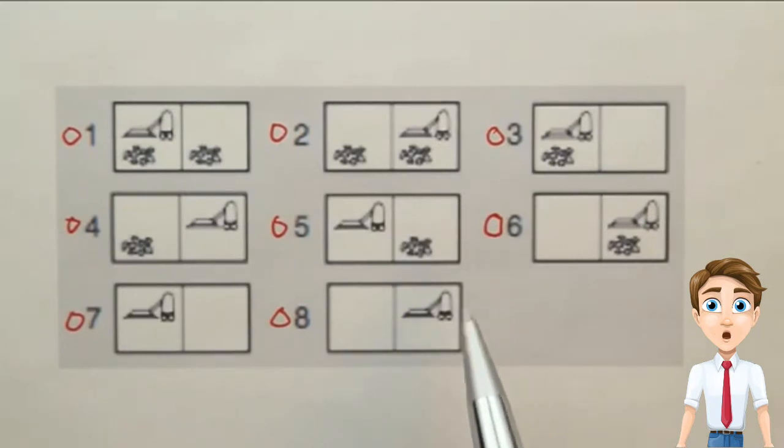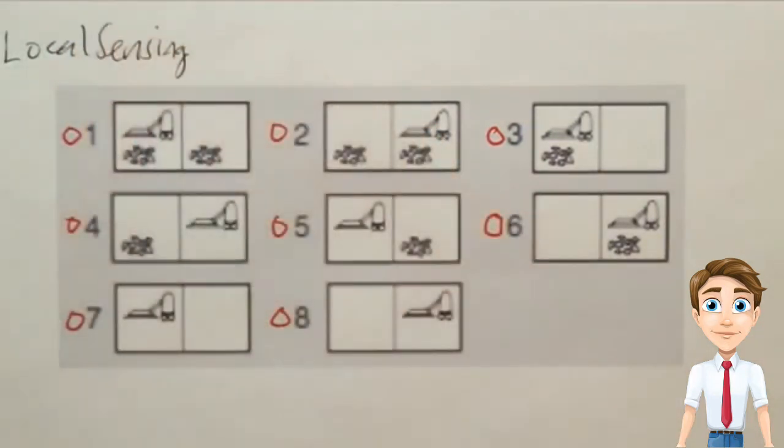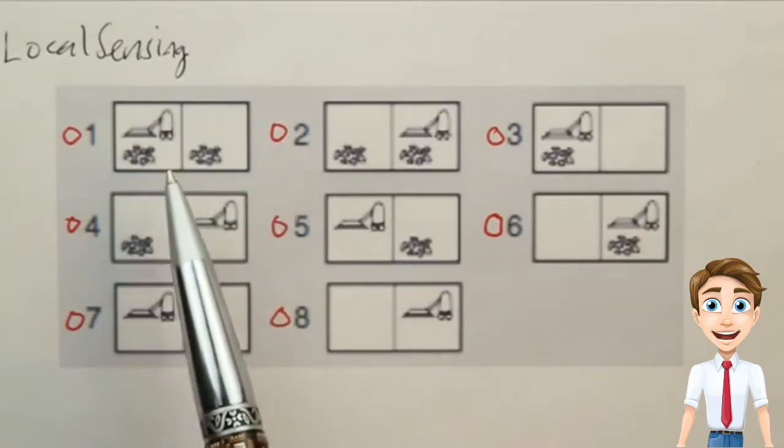In this problem, we're again in the two-location vacuum world. But this time around, we have local sensing, meaning at each turn, we get input of what location we're at, the left or the right, and whether there's dirt in that location, but we don't know what's going on in the other location.